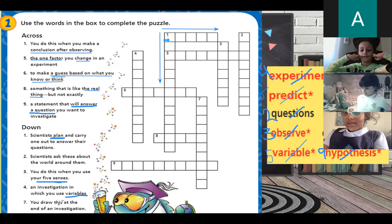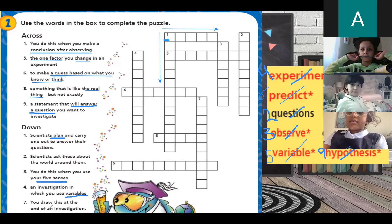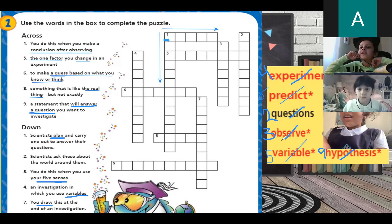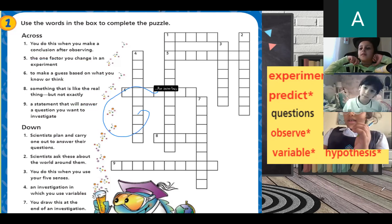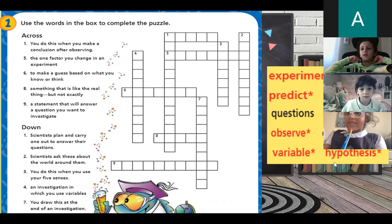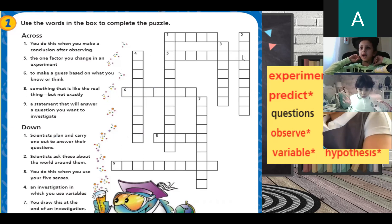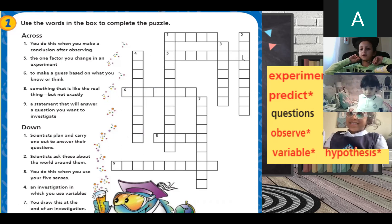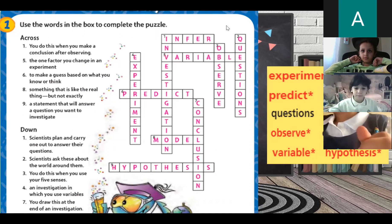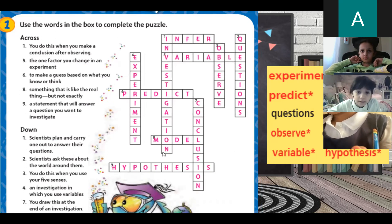Number seven: you draw this at the end of an investigation. Conclusion. Definitely, you draw a conclusion. Number seven is conclusion. Note that infer is number one across, and number one down is investigation. Variable, number five, is across.